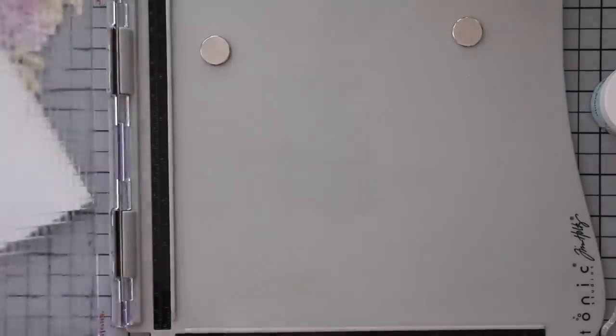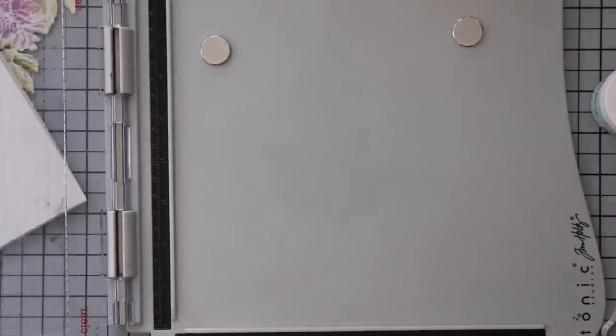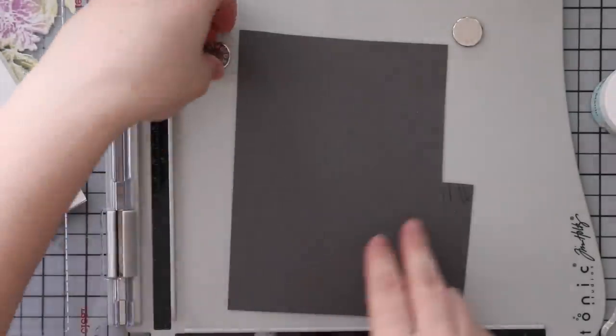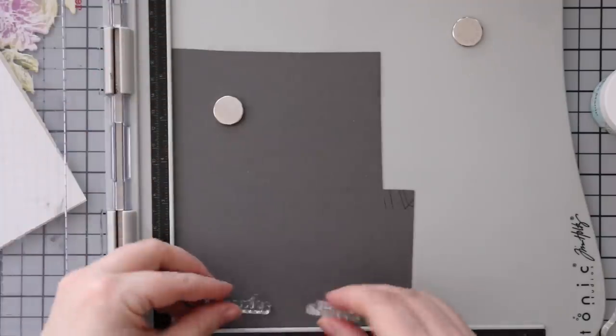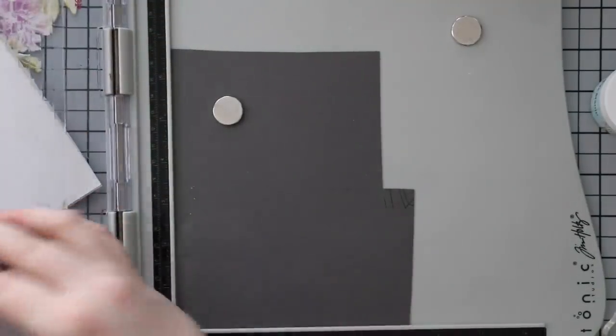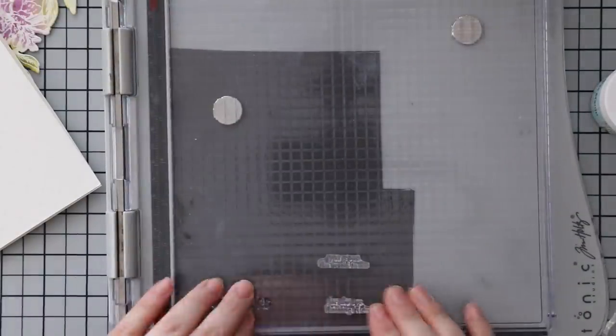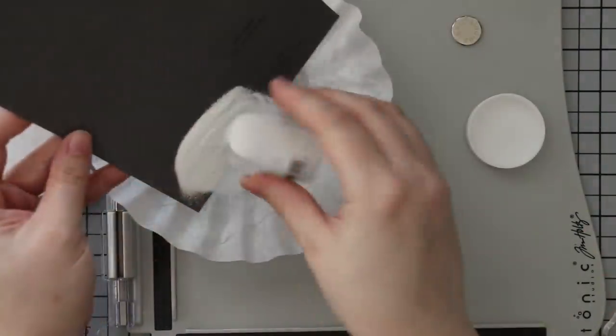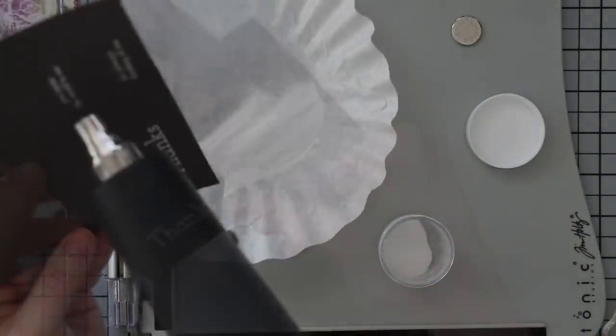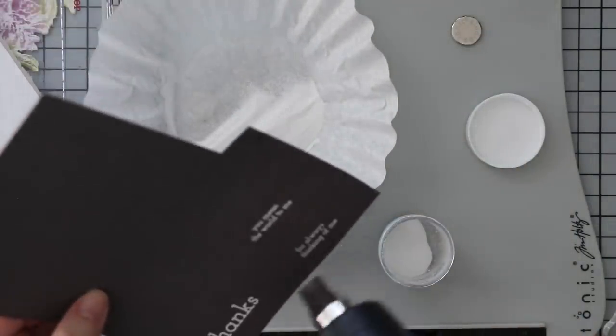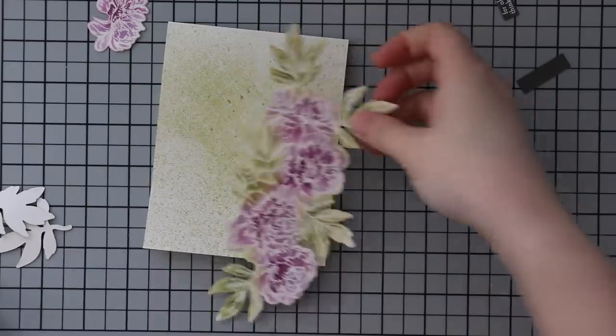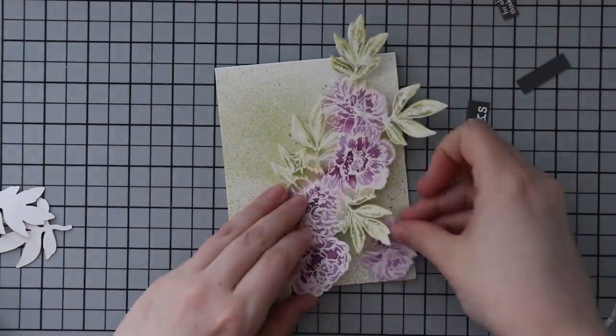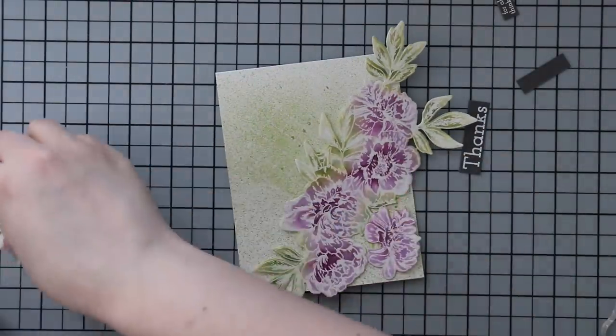For the sentiments, I'm using sentiments from that same Beautiful Flowers Too stamp set. I stamped them onto some slate cardstock with clear embossing ink. These I'm embossing with Detail White embossing powder, not the satin pearl. Then I die cut them with Simon's Sentiment Labels wafer dies.